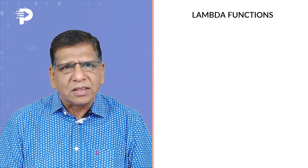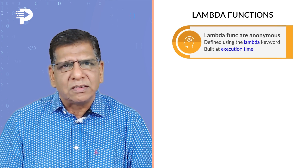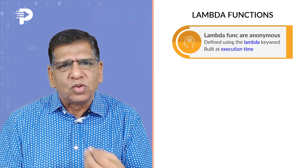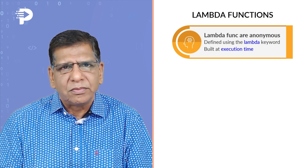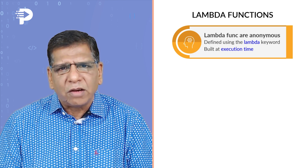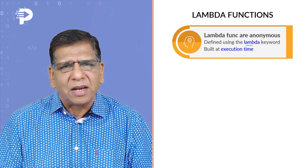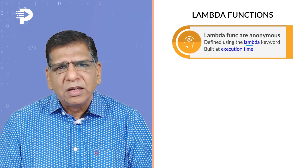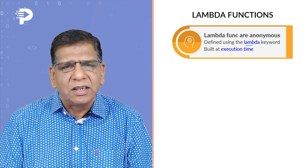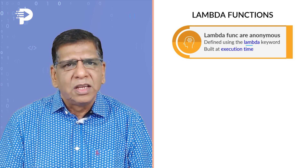Lambda functions are essentially anonymous functions. Normal functions have names; lambda functions do not have a name. There is a keyword available to define them — as expected, the keyword is lambda — and the function will be built at execution time. During execution the function gets constructed.